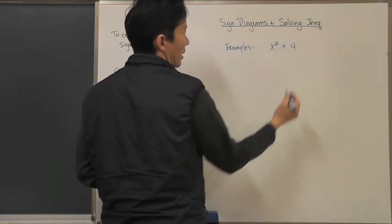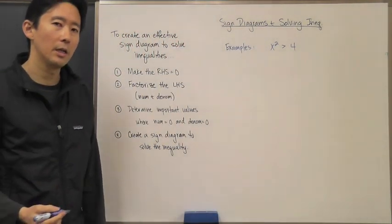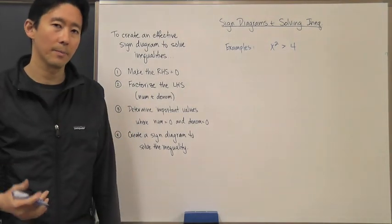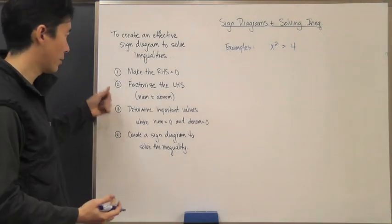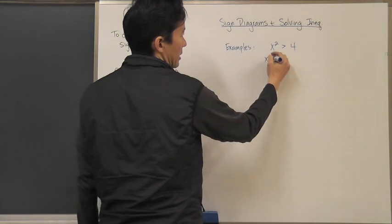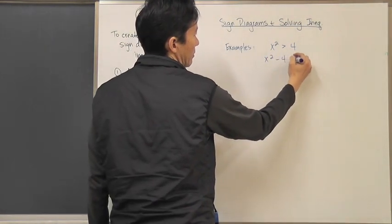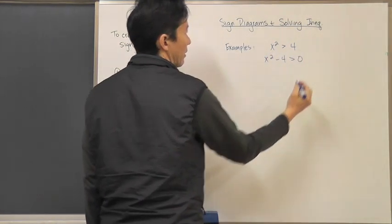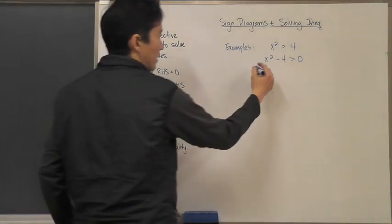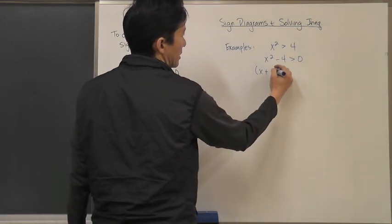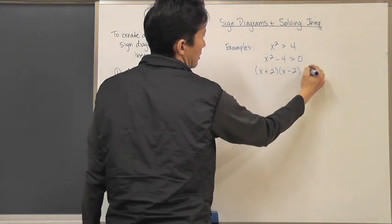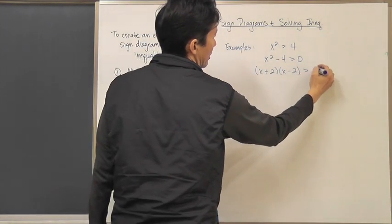Things go a little bit different when that is no longer an equal sign. Let's say for example it is an inequality — in this case a greater-than sign. So let's say x squared minus 4 has to be greater than zero. That's step one. We want to factorize it: that's x plus 2 times x minus 2 is greater than zero.